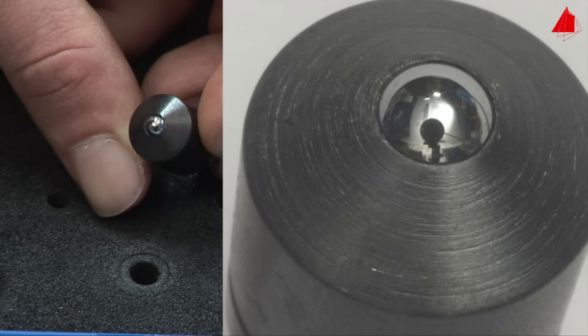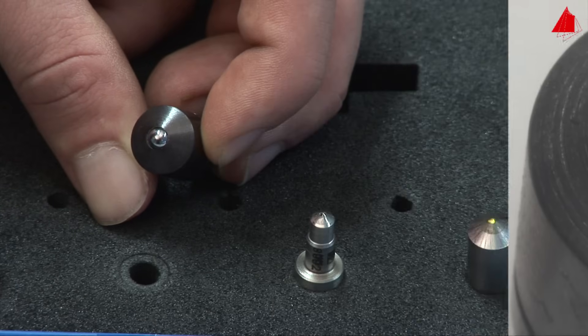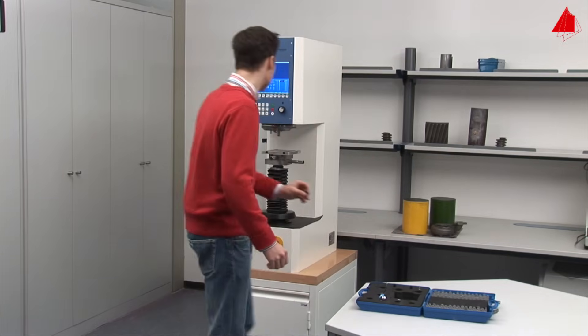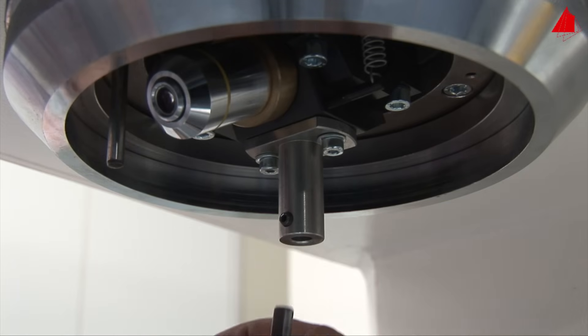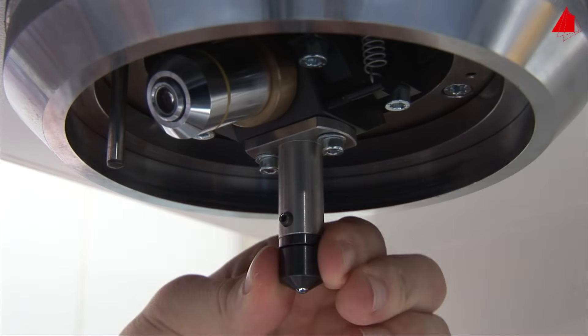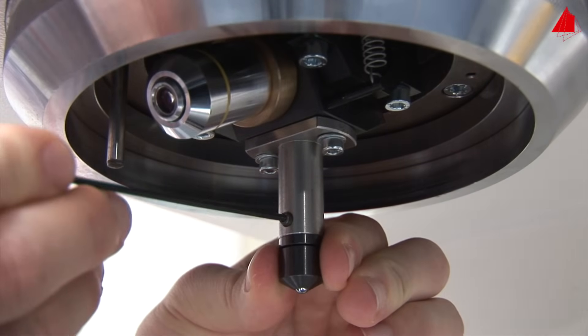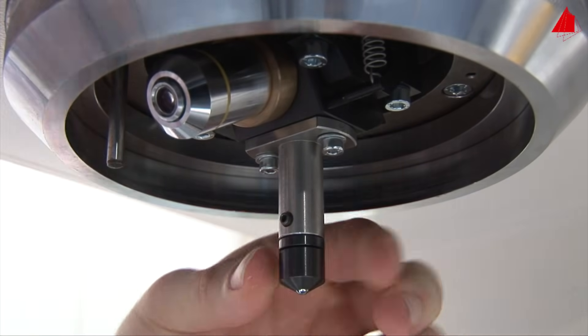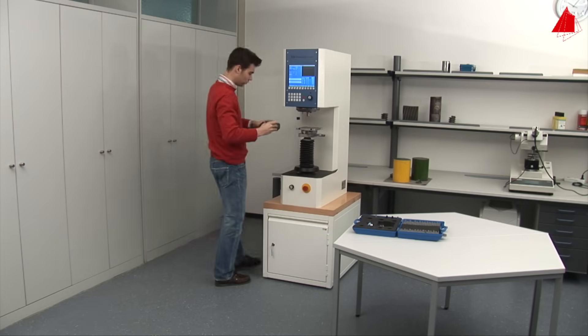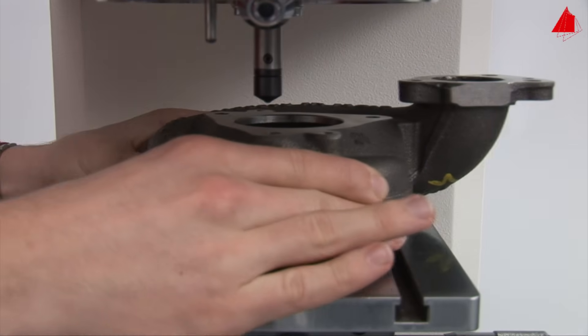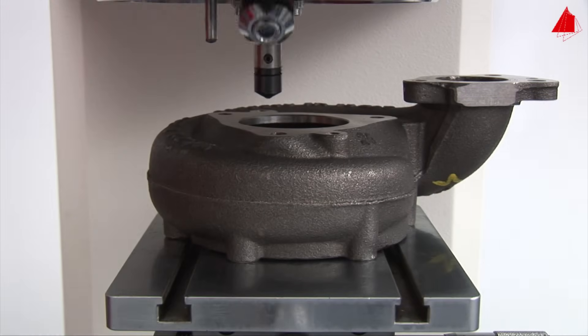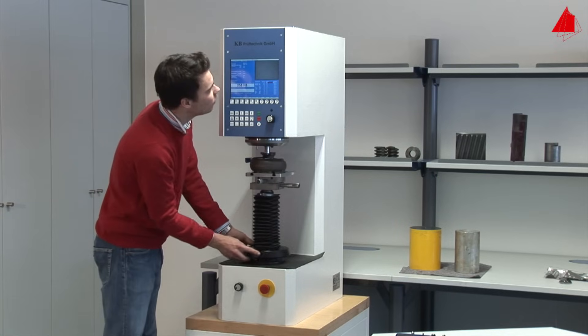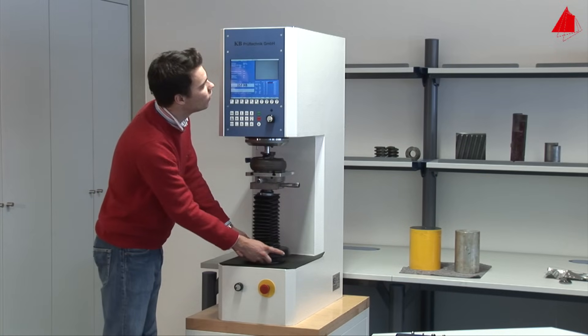The tester selects a suitable spherical indenter and inserts it into the holding device of the testing machine. Next, he puts the turbocharger housing onto the support table, rotates the microscope lens into vertical position and adjusts the correct height of the test piece.